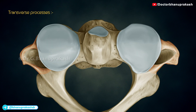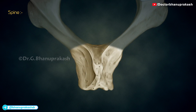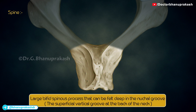Transverse processes represent true posterior tubercles only and are very small. The foramen transversarium is directed upwards and laterally. The spine is large, thick and very strong, and is deeply grooved inferiorly. The tip is bifid, terminating in two rough tubercles. It has a large bifid spinous process that can be felt deep in the nuchal groove, the superficial vertical groove at the back of the neck.